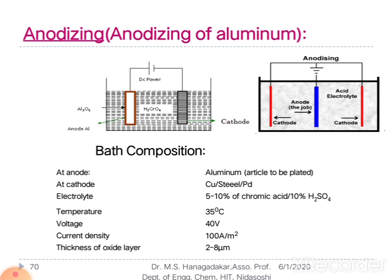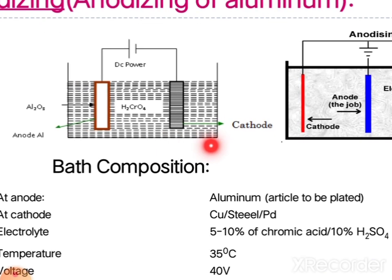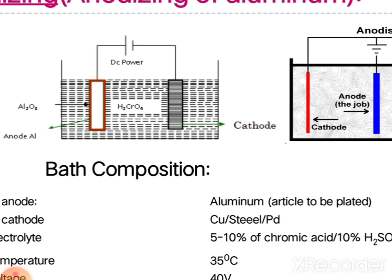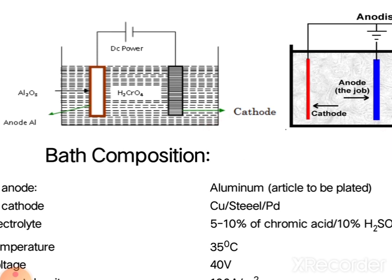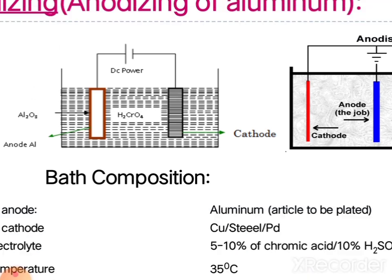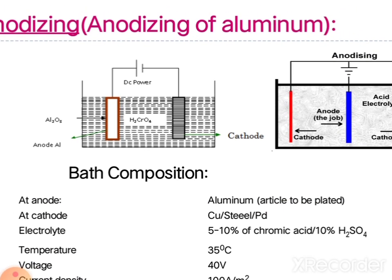Let us discuss how to prepare the bath solution before going for the anodization of aluminium. We take two electrodes: one cathode and one anode. As you can see in the cell diagram, the blue one is the anode and the red ones are the two cathodes. Both electrodes are immersed into the electrolyte bath made up of an acid such as chromic acid, sulfuric acid, or phosphoric acid. The article to be coated is made the anode — that is, the aluminium article to be protected is taken as the anode, where the coating is to be made.